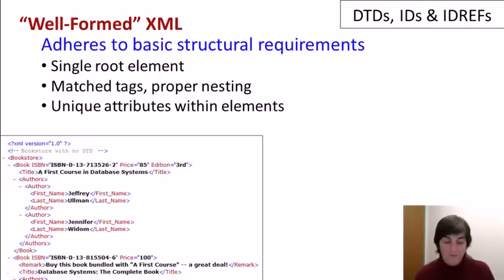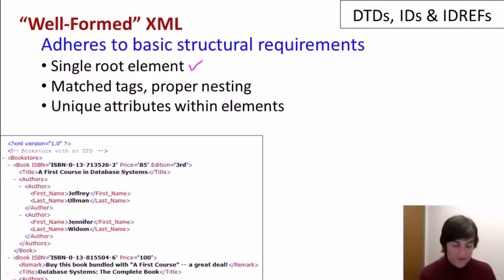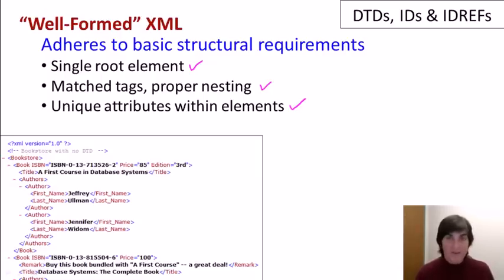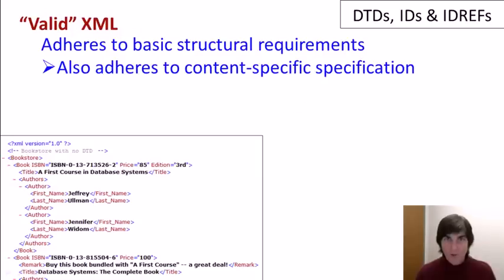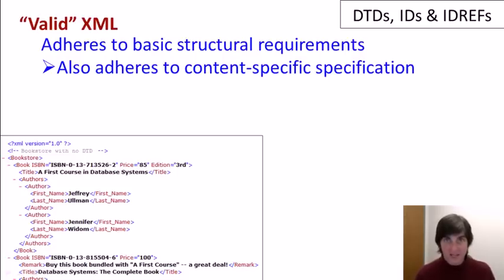We learned that well-formed XML is XML that adheres to basic structural requirements: a single root element, matching tags with proper nesting, and unique attributes within each element. Now we're going to learn about what's known as valid XML. Valid XML has to adhere to the same basic structural requirements as well-formed XML, but it also adheres to content-specific specifications.